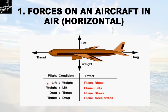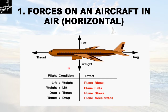Flight conditions: if lift is more than weight, the plane rises. If weight is greater than lift, the plane falls. If drag is greater than thrust, the plane slows down. If thrust is greater than drag, the plane will accelerate in the direction of propagation.